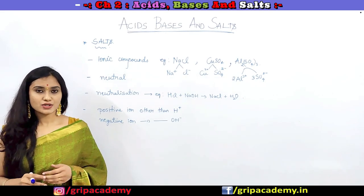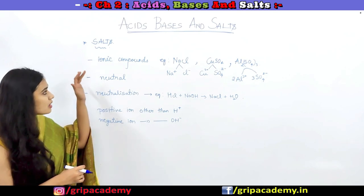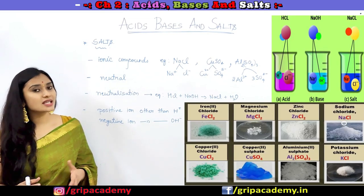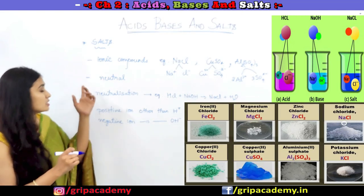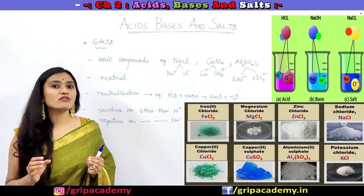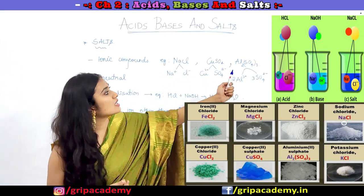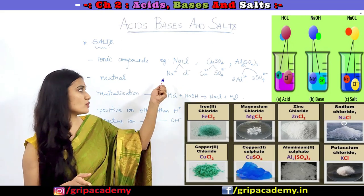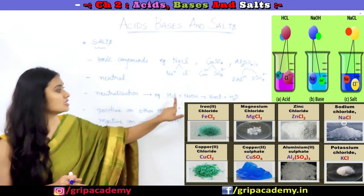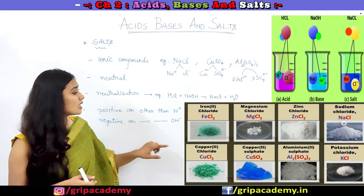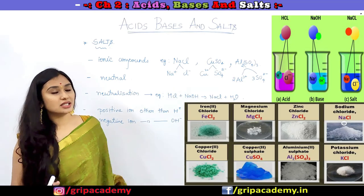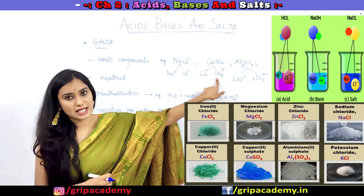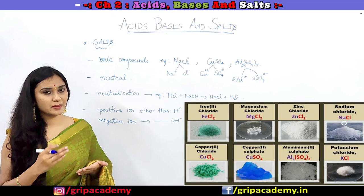Now let us discuss about salts in detail. What are salts? Salts are ionic compounds which have a positive ion other than H+ and a negative ion other than OH- ions, and they are neutral in nature. For example, sodium chloride salt (NaCl) dissociates into Na+ and Cl-. The positive ion other than H+ is Na+, and the negative ion other than OH- is Cl-. Similarly, copper sulfate salt dissociates into Cu²+ and SO4²- ions. That's the reason they are called ionic compounds, as they are made of ions.